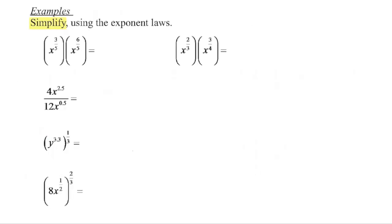Let's practice simplifying. In our first example we are multiplying two powers with the same base. When we multiply powers with the same base, we add the exponents. When we add fractions, we need a common denominator. In this case we already have a common denominator of five, so we add the numerators: three plus six is nine, and the denominator stays the same.